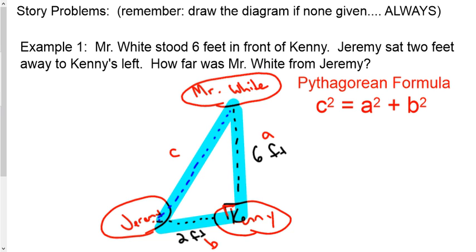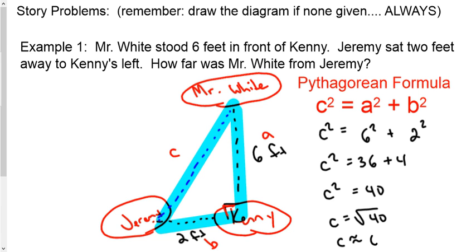So let's just go plug our information in and solve with the Pythagorean formula. And basically, using the calculator now, square root of 40 would be about 6.3 feet rounded to the nearest tenth. So how far is Mr. White from Jeremy? About 6.3 feet.